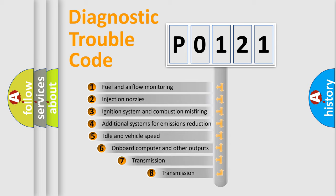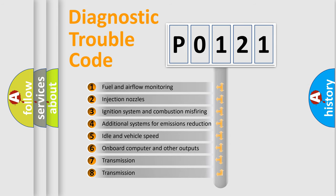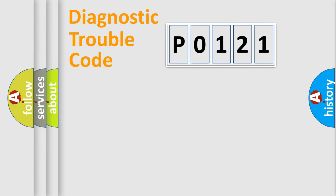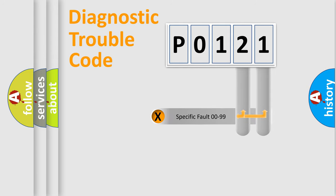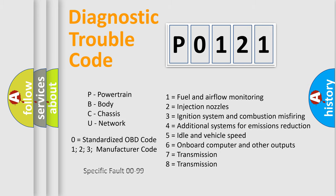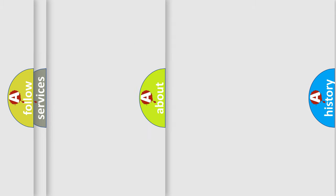The third character specifies a subset of errors. The distribution shown is valid only for the standardized DTC code. Only the last two characters define the specific fault of the group. Let's not forget that such a division is valid only if the second character code is expressed by the number zero.